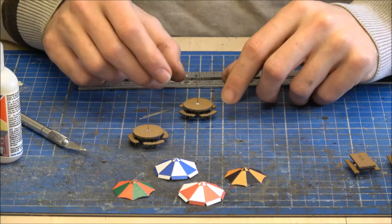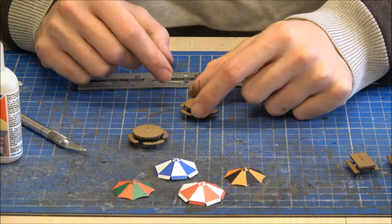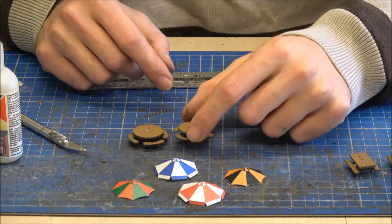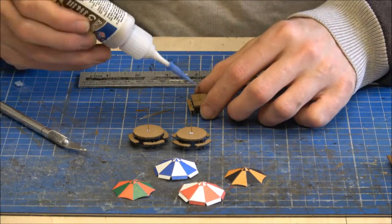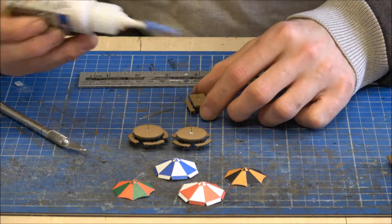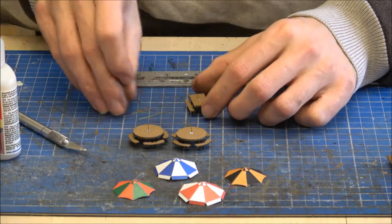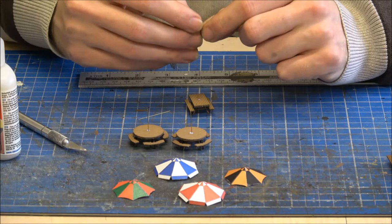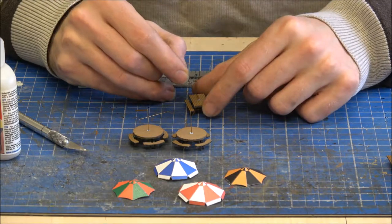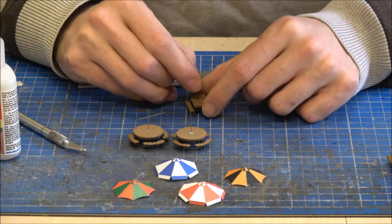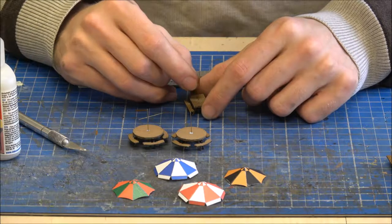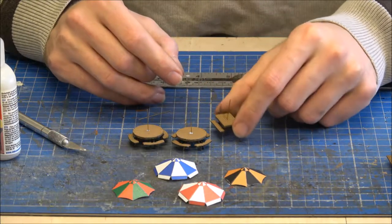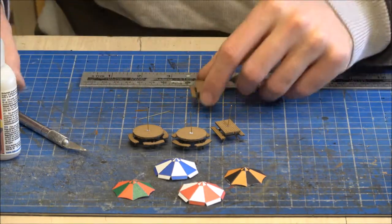It doesn't really matter if they're not dead straight in the holes, because you always find that these umbrellas do have a tendency to lean over, or certainly that's what I've found whenever I've been to places that have had them. They certainly always seem to like to fall over to one side or the other.